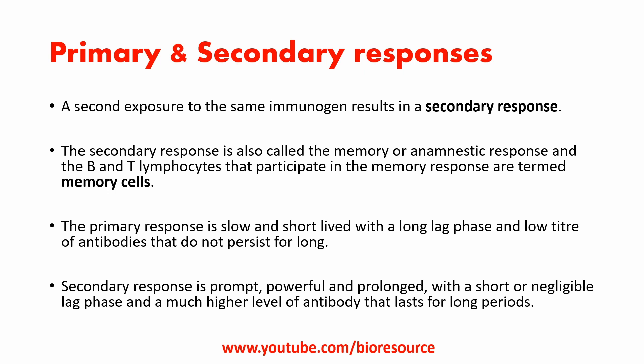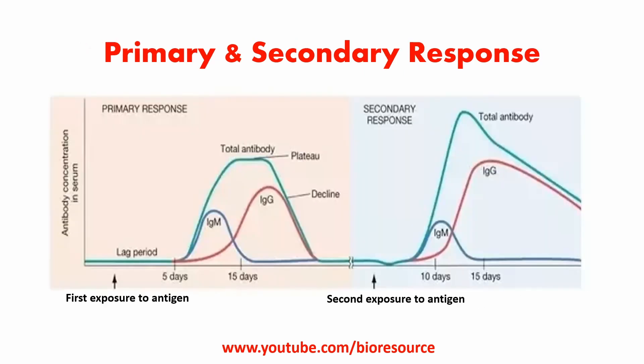As you can see in this graph, the first exposure to the antigen shows the levels of IgM and IgG, whereas in the second exposure the total antibody levels may go much higher. In the primary response, the first class of antibody detected is generally IgM, then IgG or another antibody class.